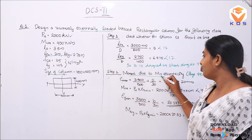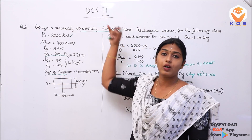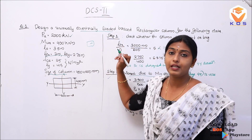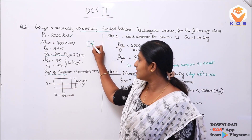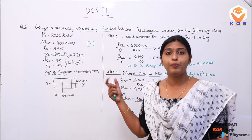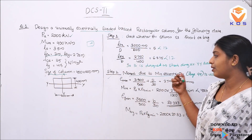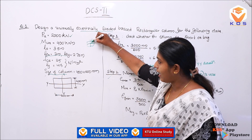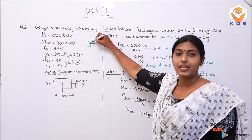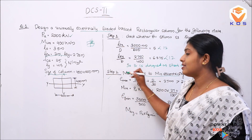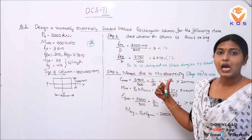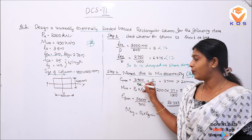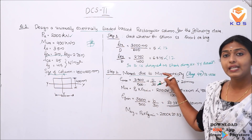The second step is the moment due to minimum eccentricity. It is needed because when a load is applied, eccentricity causes the load to act at a particular distance, and the moment will be different in the two directions. We have to calculate the eccentricity in both directions using the minimum eccentricity equation.